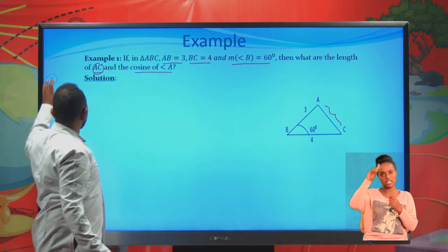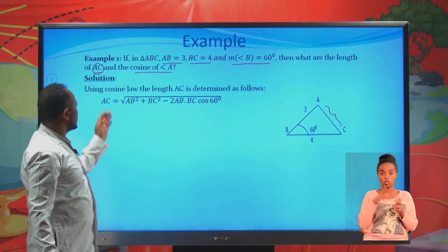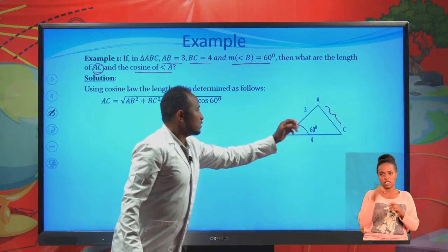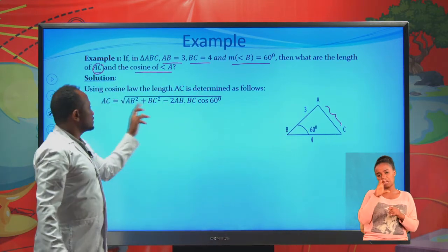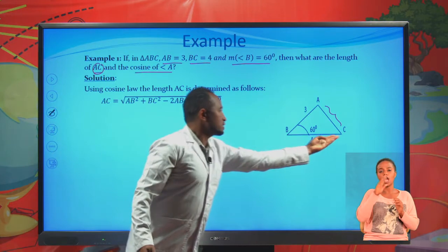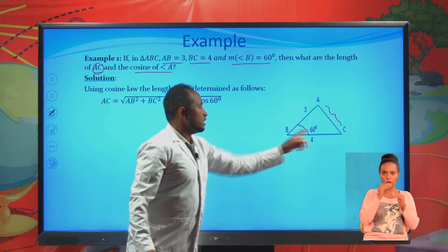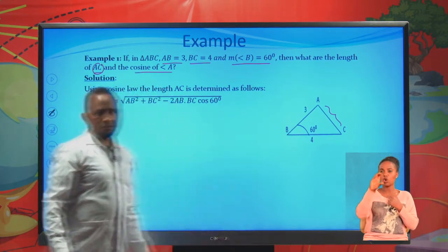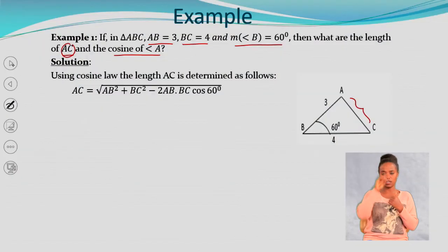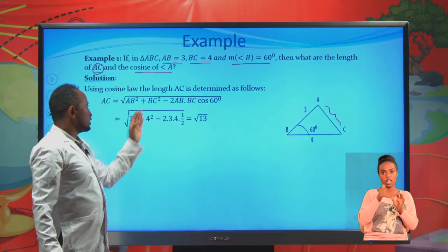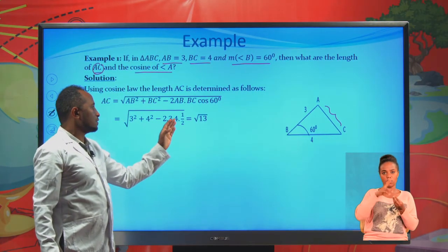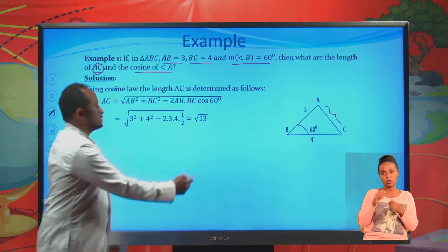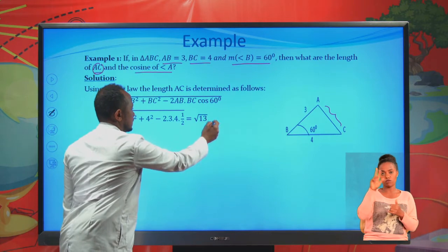Substituting the values: AC equals the square root of 3 squared plus 4 squared minus 2 times 3 times 4 times cosine 60 degrees. Cosine 60 is one half, so you get the square root of 9 plus 16 minus 12, which gives the square root of 13. So AC equals the square root of 13.